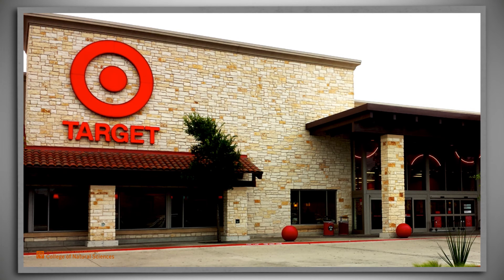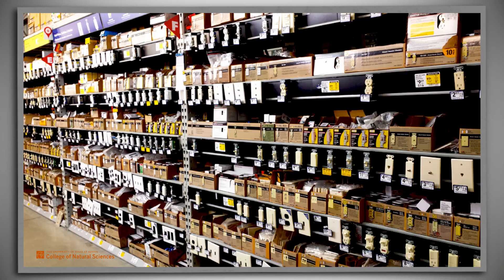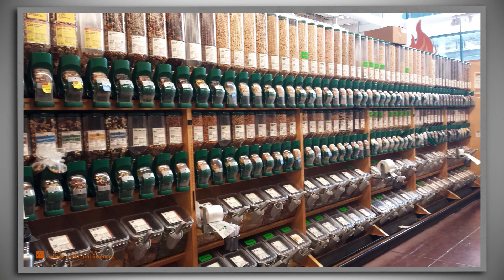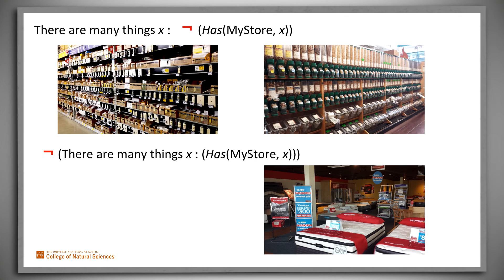'Target doesn't have a lot of things.' 'That's not true — Target does have a lot of things.' 'That isn't what I meant. There are a lot of things that Target doesn't have.' In logic, we must distinguish between 'there are many things with the property that my store does not have them' and 'it is not true that my store has a lot of things.'